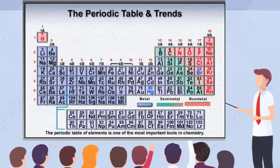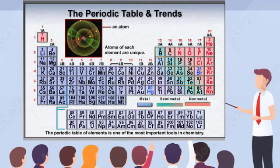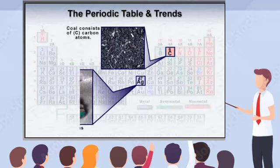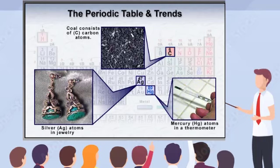Each element is made of a particular type of atom, which differs from the atoms of any other element. The periodic table displays the known elements according to the composition of their atoms, or atomic structure.